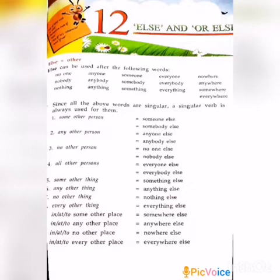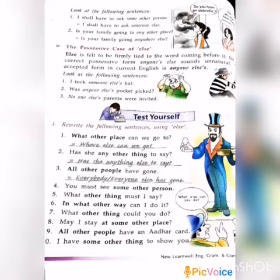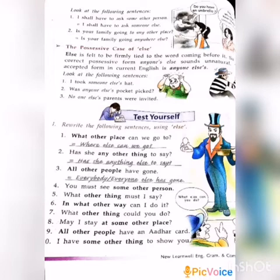Now all of you turn to page number 60. Look at the following sentences. First: 'I shall have to ask some other person' is equal to 'I shall have to ask someone else.' Second: 'Is your family going to any other place?' is equal to 'Is your family going anywhere else?' So we can understand the substitution of words where we use else, which is equal to other.